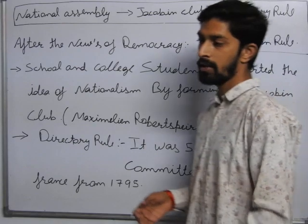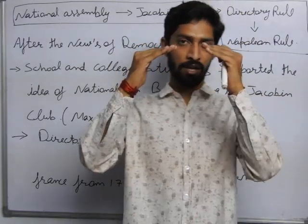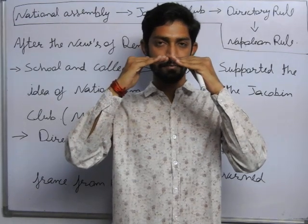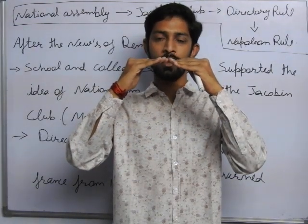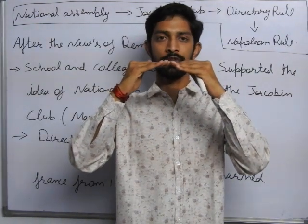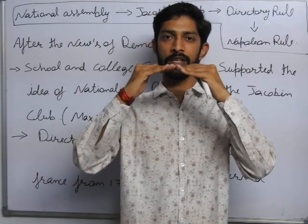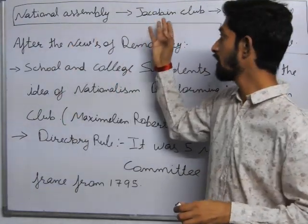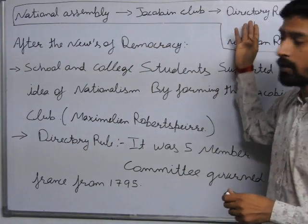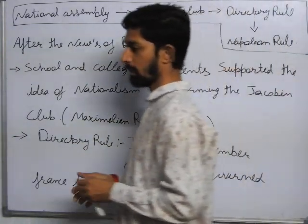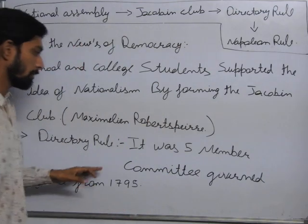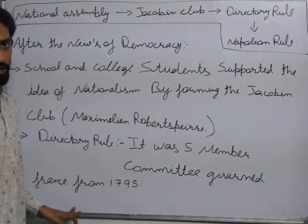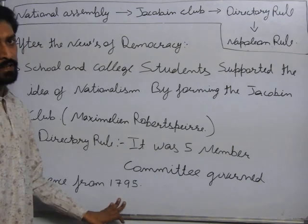How did France come to be ruled this way? First, Europe was a monarchy system, but the people opposed the monarchy, so they started a revolution. The revolution started in France, and then came the National Assembly, then the Jacobin Club, then the Directory Rule. The Directory Rule was basically a five-member committee which governed France starting in 1795.